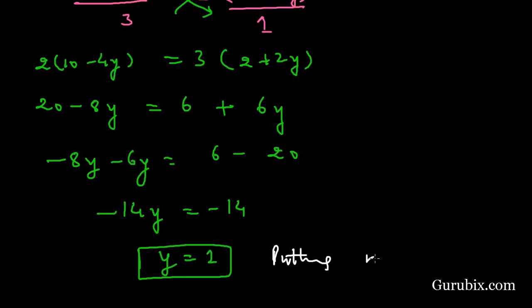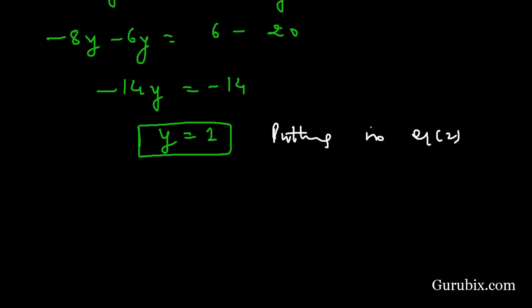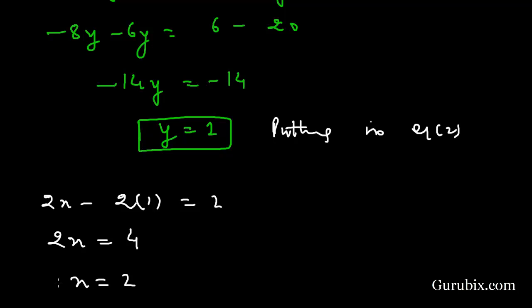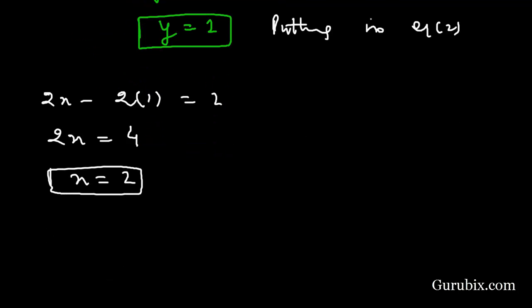Now we substitute y = 1 into equation number 2: 2x - 2(1) = 2, so 2x = 4, meaning x = 2. This is the solution of the pair of linear equations by the substitution method: x = 2, y = 1. Thank you.